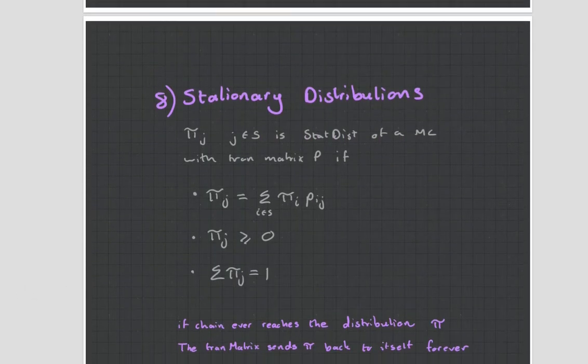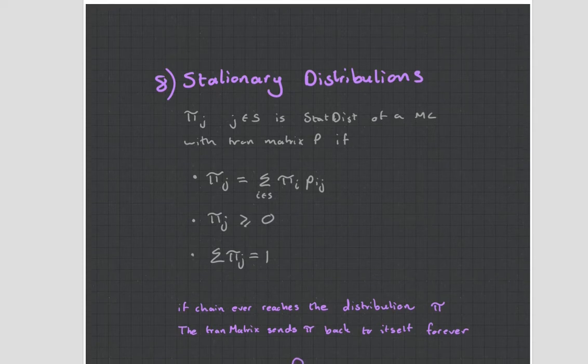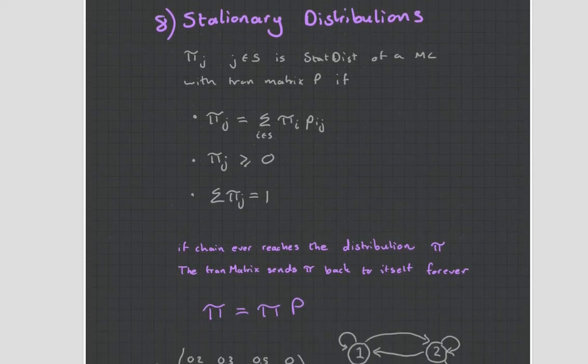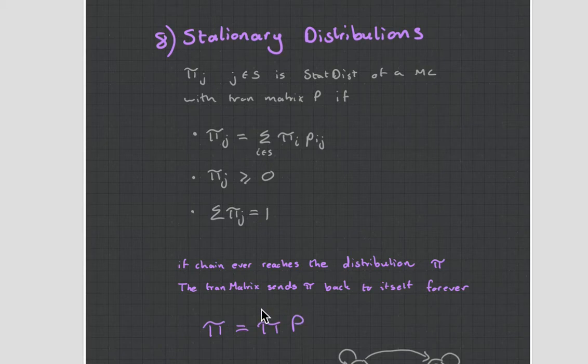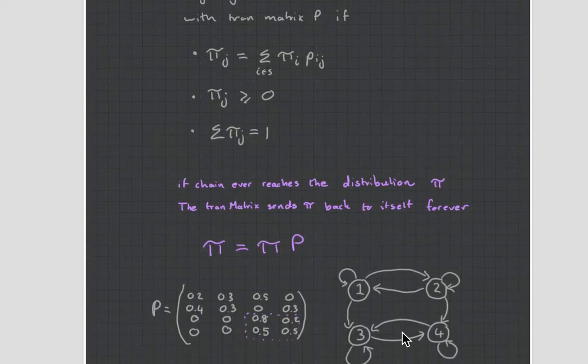Let's look at stationary distributions. These things are quite phenomenal. Here, this is the formula. Pi is equal to pi times P. And that is the interesting thing about stationary distributions. Pi represents the distribution, or stationary distribution, and P is our matrix, our transitional matrix. For example, there's our matrix there. That's the Markov chain drawn out.